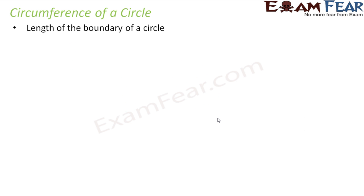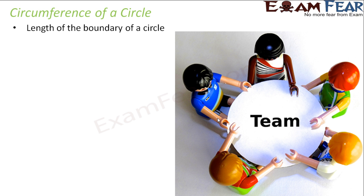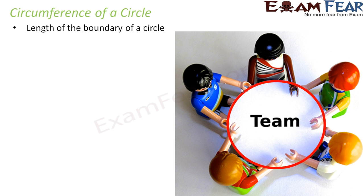First, we will talk about circumference of a circle. The circumference is nothing but the length of the boundary of a circle. Let's say there is a circular table in a meeting. If I ask you what is the length of the boundary of this circular table, I am not concerned about the region enclosed within the circle — only the total length of the boundary. The red mark shows you the boundary. Circumference, in a way, is nothing but perimeter. Like we talk about perimeter of a square, rectangle, or parallelogram — similarly, circumference is the perimeter of a circle.